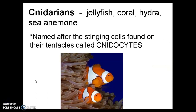Next, we have the cnidarians. These include animals like jellyfish, corals, hydras, and sea anemones. What these animals all have in common is that they have stinging cells found on tentacles, and these cells are called cnidocytes.